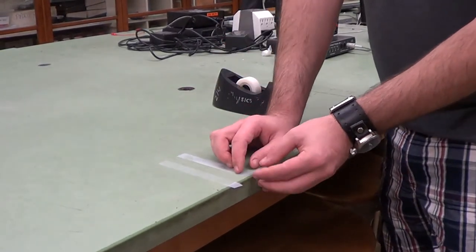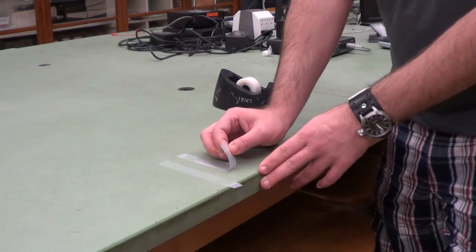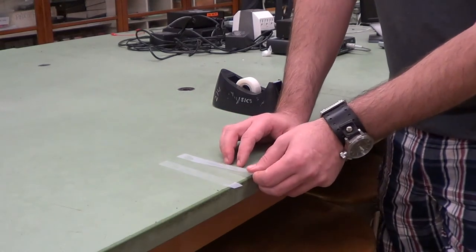What you're going to do is you're going to fold a tab at the end of the tape so when you pick it up you don't need to worry about the sticky part. You're going to put it down on the table